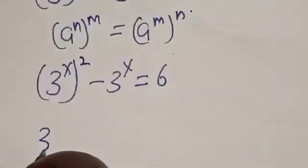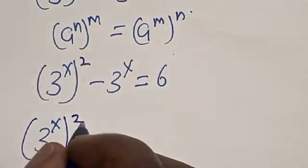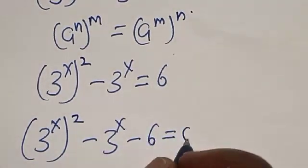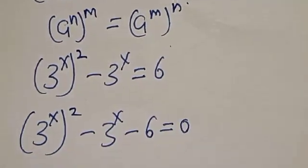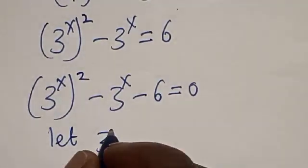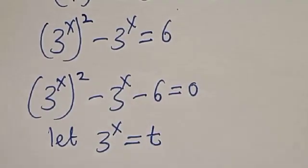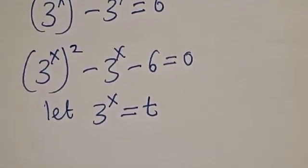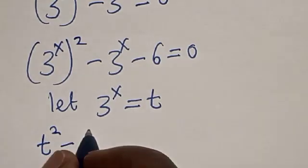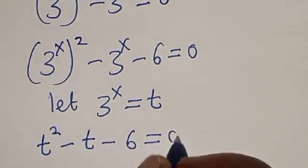Now, 3 raised to power 2x minus 3 raised to power x minus 6 is equal to 0. Let t equal 3 raised to power x. Then t squared minus t minus 6 is equal to 0.